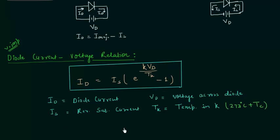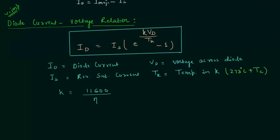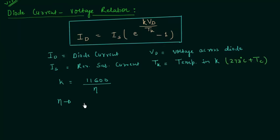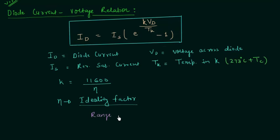Small k is the Boltzmann constant, and it is given as 11600 divided by Eta. Now Eta is very important — Eta is the ideality factor. The ideality factor is a function of operating conditions and physical construction, and it has a range between 1 and 2. This range depends on various factors.